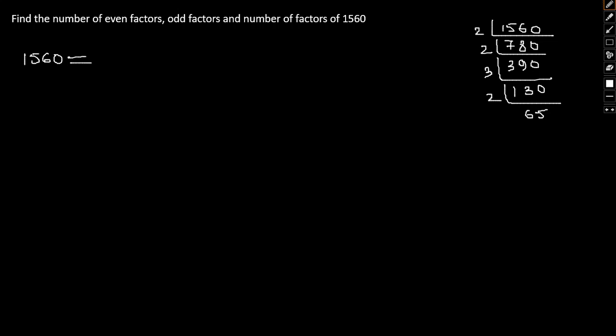And so we have 2 cube into 3 into 5 into 13. So therefore number of factors will be 3 plus 1 into 2 into 2 into 2, that is 4 into 2 into 2 into 2, 8 into 2, 16 into 2.